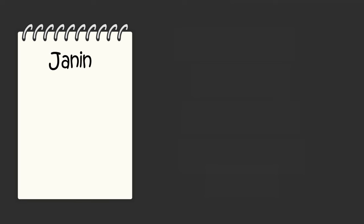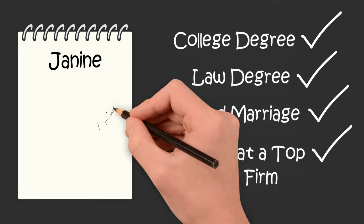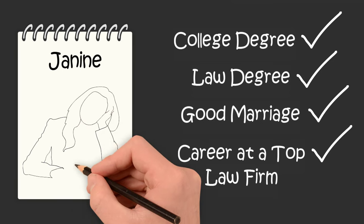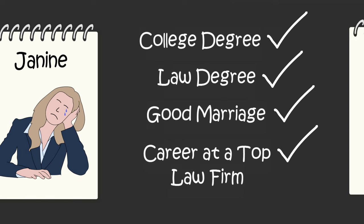One student named Janine was a successful lawyer in her mid-30s who had everything she wanted. She got a college degree, her law degree, she had a good marriage, and a career at a top law firm doing important and influential work. But after driving home from the law firm, she would often sit out on her deck at night and cry. She had the life that she once wanted, so why wasn't she happy?